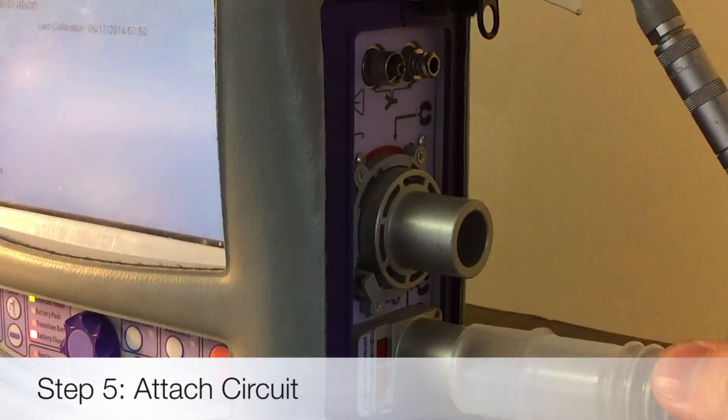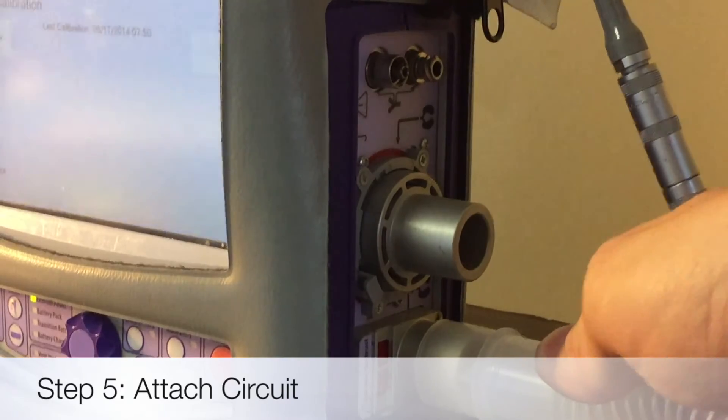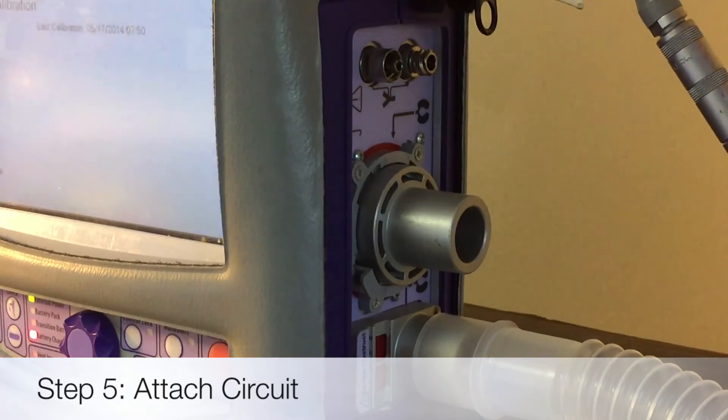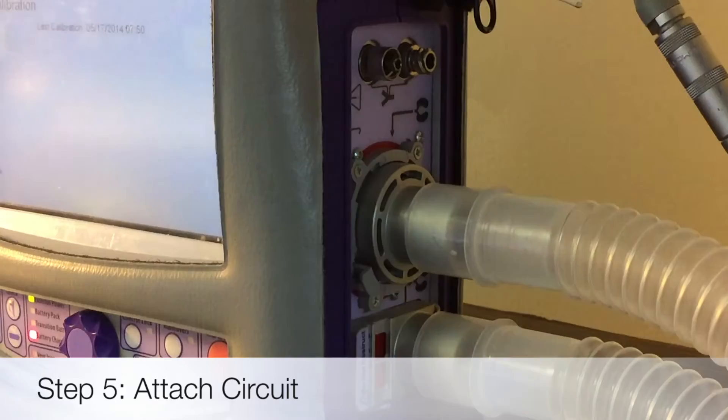Now that it's tightened, you can go ahead and attach it to the vent. This is the inhalation limb and then the exhalation limb is going to go on right now and that's the one with the water trap on it.